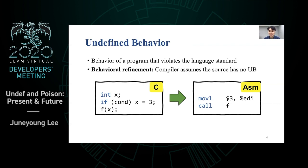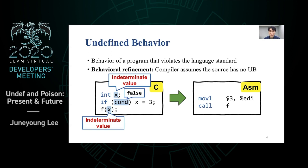An optimizing compiler can compile a C program into assembly removing the load of value x as well as the branch-on-cond, which is beneficial in terms of code size and performance. The precise reasoning: x is uninitialized, causing it to contain an indeterminate value. When cond is false, x is not updated, so the indeterminate value is read. According to the C standard, this is undefined behavior, so the compiler can assume cond is always true, emitting constant 3 only.